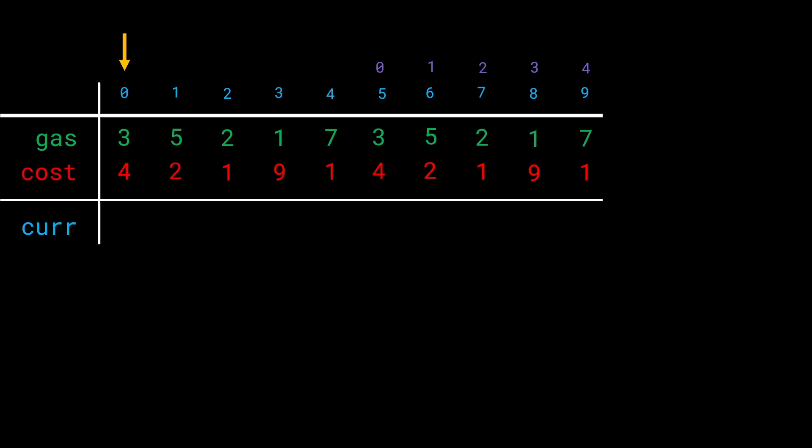How does this help? Because we're going on a circular route, if we start from index 0 we want to end at index 0 again. By doubling the array, we say: if you start from index 0, check if you can reach index 5; start from index 1, check index 6; start from index 4, check index 9. We've simply doubled the array to avoid the circular complexity.